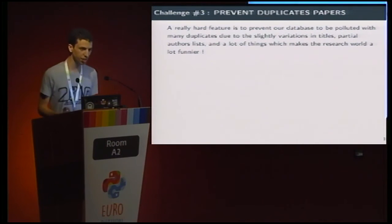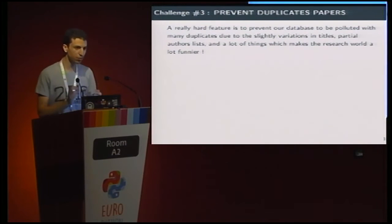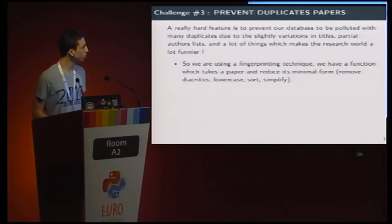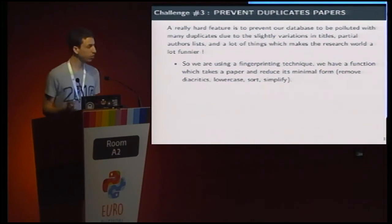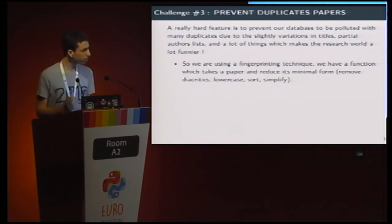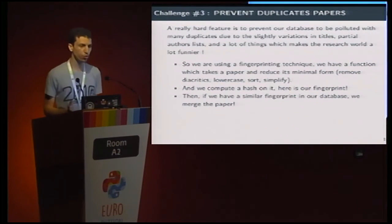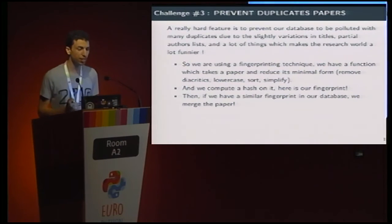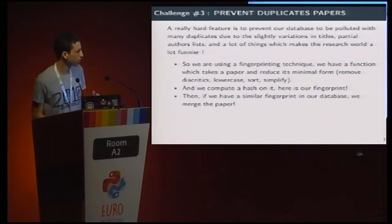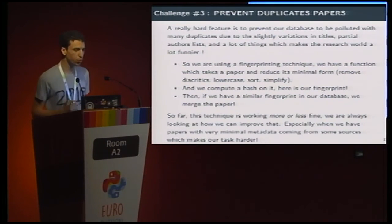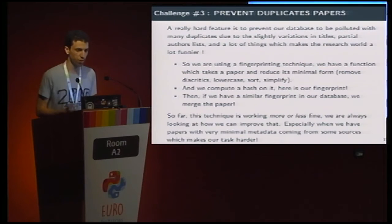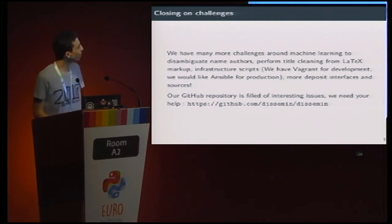The third challenge is the hardest, in my opinion: how to prevent duplicate papers. Because we have so many sources which provide slight variations in the metadata. We tried a fingerprinting technique. We have a function which takes a paper and reduces it to its minimal form — we remove diacritics, we lowercase everything, we sort the authors list, we simplify the title. Finally, we compute a hash on it and store it. If we have a similar fingerprint in our database, we can merge the paper and get more and more metadata on it. This technique works more or less, but we always have some cases where we don't have the title because some sources don't require you to enter a title for a paper, which is absurd.